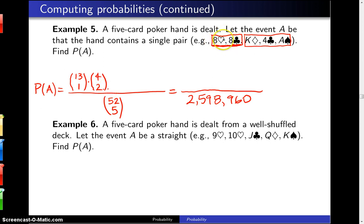Now that takes care of the 8's, and now we've got to go on to the three other cards. Well, the first thing we do is we say there are 12 remaining ranks, and we choose 3 of those ranks. In this particular case, we chose a king, a 4, and an ace.